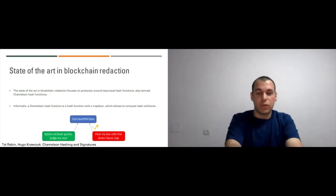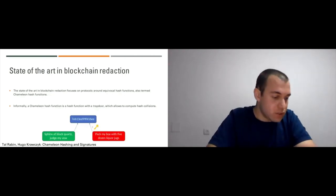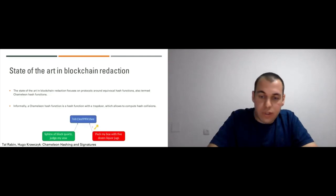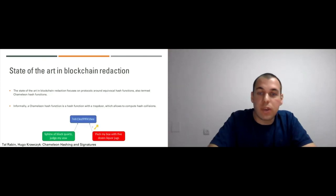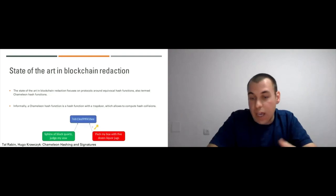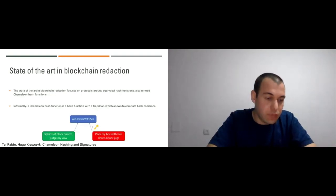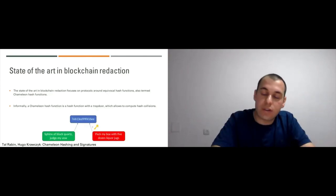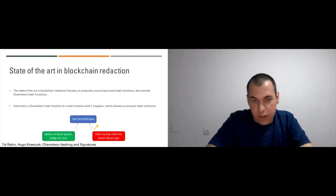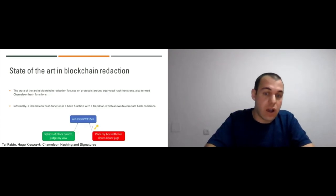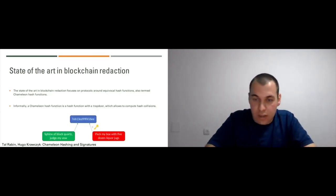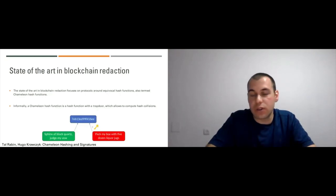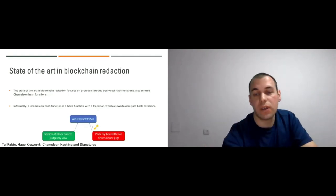What is the state of the art in blockchain redaction? The most prominent technique uses a chameleon hash function — a hash function that uses public key cryptography and allows someone who knows a trapdoor to create a hash collision. In the example shown, the hash in blue is the target, and if someone knows the trapdoor they can carefully select a string that, under the chameleon hash function, collides with the original hash.